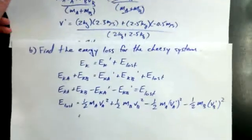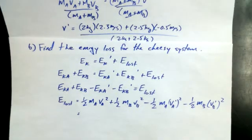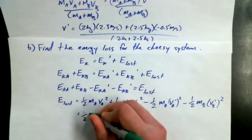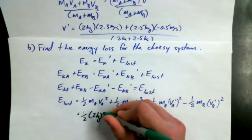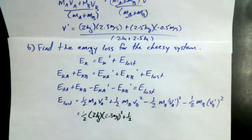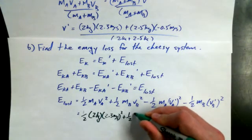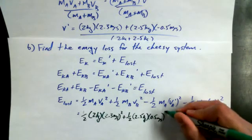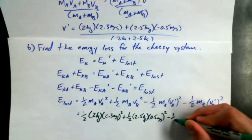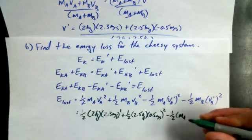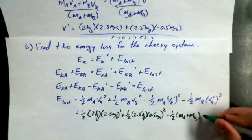That's going to start to get messy in a hurry. It's starting to get to be a big equation. I'm going to need some help from some people in a minute. Now for the 1 half MA VA prime squared minus 1 half MB VB prime squared, if they stick together, could I just do 1 half MA plus MB times V prime squared? Okay, good.